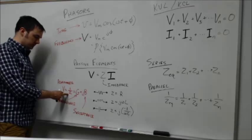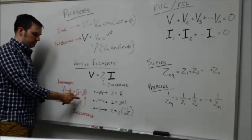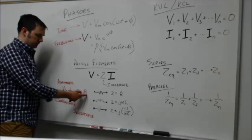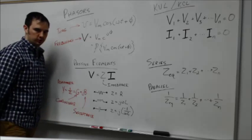Admittance can also be written in the form of G plus JB, where G in this case is defined as the conductance and that imaginary component B is the susceptance. Just some terms to note so you understand what they are.